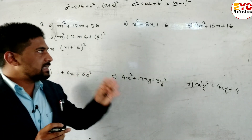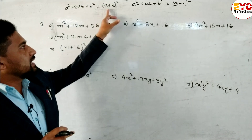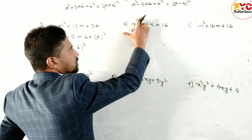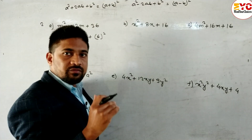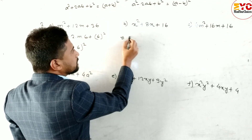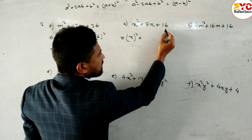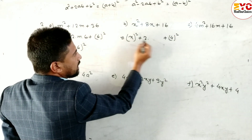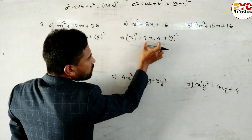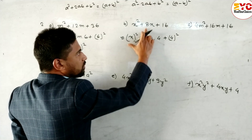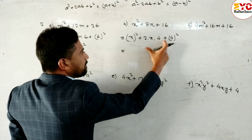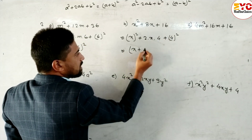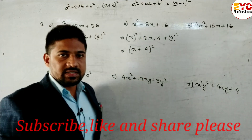If the first and last terms can be converted into whole square form, we use either (a+b)² or (a-b)². For Question 2b: x² + 8x + 16. We write x² as (x)² and 16 as (4)² since 4² = 16. The middle term 2ab = 2·x·4 = 8x. This is in the form a² + 2ab + b², so the formula gives us (x + 4)².